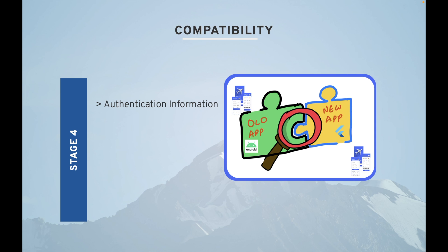Under compatibility, the first thing is authentication information. If a user has already logged in to your older app, after upgrade you want to make sure they don't have to log in again. For example, if I'm logged into Facebook and Facebook releases a Flutter-migrated app, I would not want to be asked to log in again. You should make sure authentication information is not lost. Next is local DB data — all local database data should be preserved.